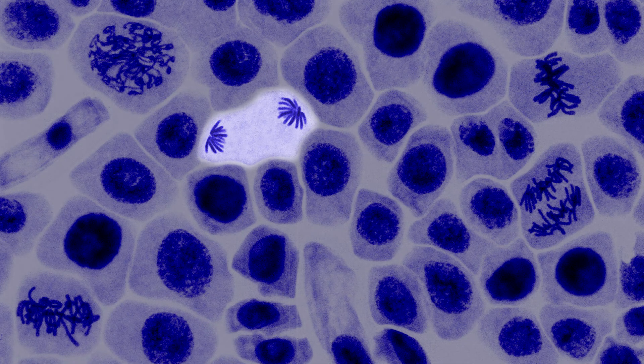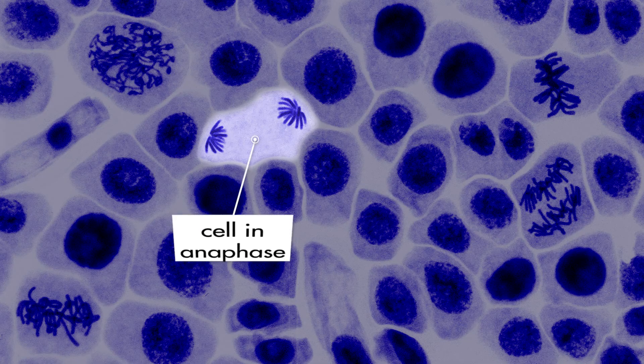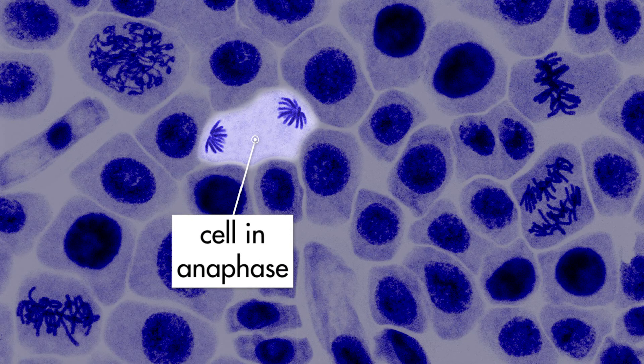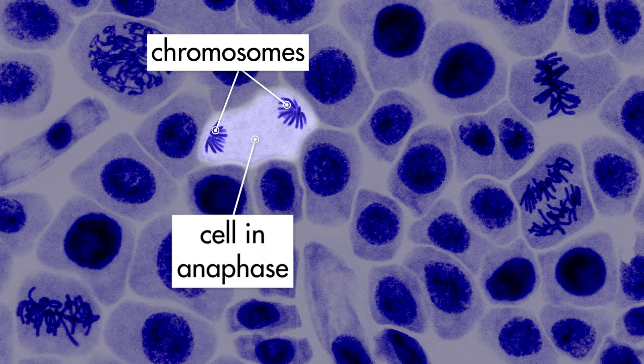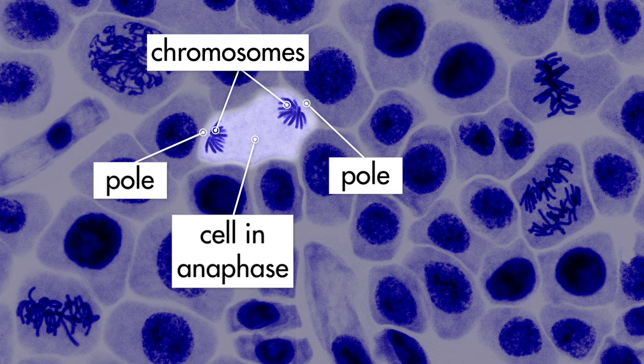After metaphase, a cell enters the next phase of mitosis called anaphase. During anaphase, the replicated chromosomes split apart again into individual chromosomes, and the chromosomes begin to move toward the poles of the cell.